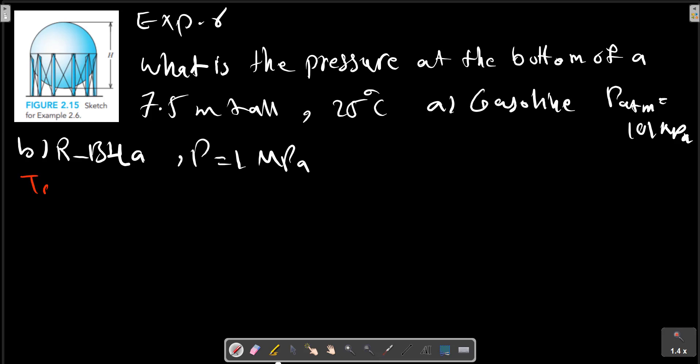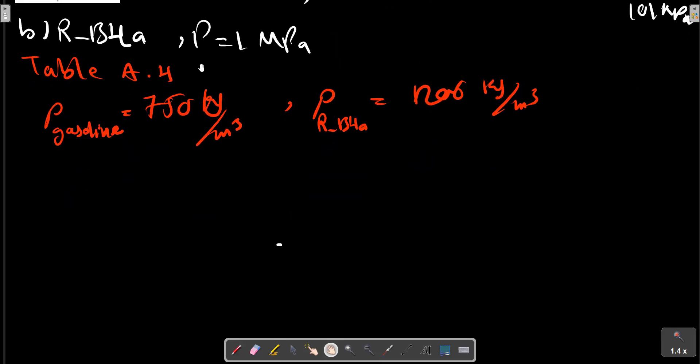The gasoline density is obtained from the table. Now we can calculate the pressure using delta P equals rho g h.